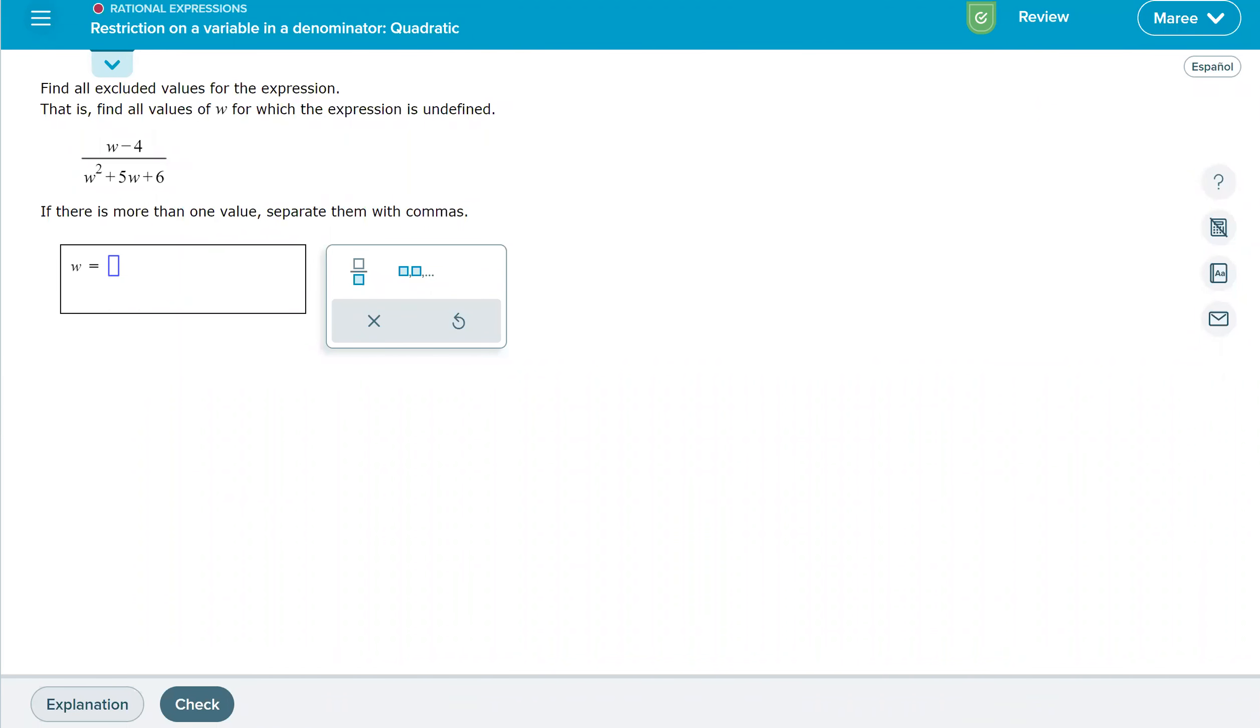In this problem about restrictions on a variable in a denominator quadratic, the fraction is undefined when the denominator equals zero. So we want to set the denominator equal to zero. We're going to have to factor the denominator so that we can find out the zeros of this quadratic.